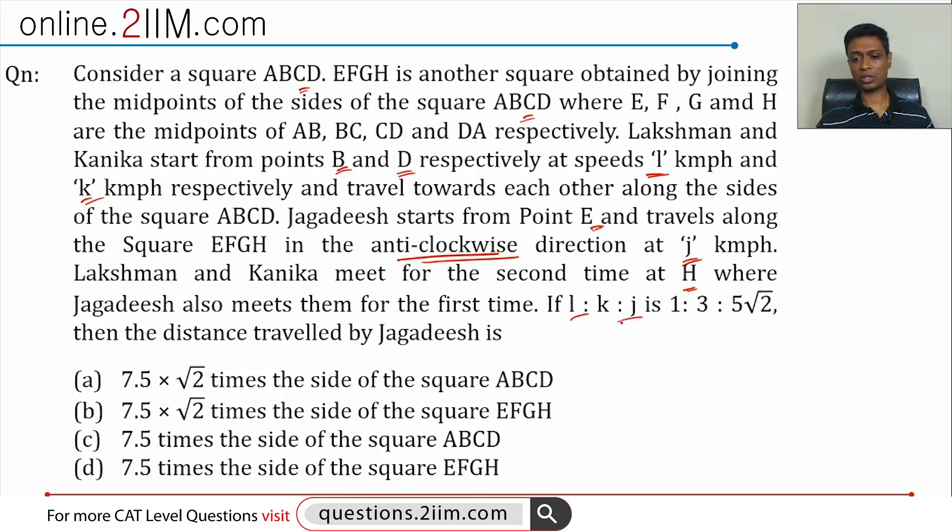If L is to K is to J is 1 is to 3 is to 5√2, then the distance traveled by Jagdish is what we need to find. This question is going to use two parts geometry and one part visualization. We're not going to do much distance by time equals speed. This is a question that's woven round like a puzzle. If you can crack how they are moving towards each other, there will be practically nothing to solve.